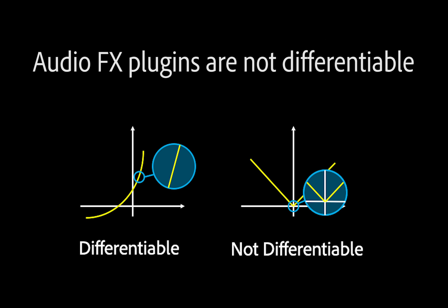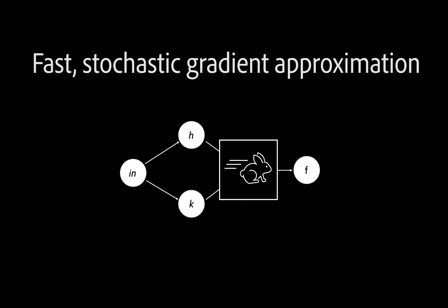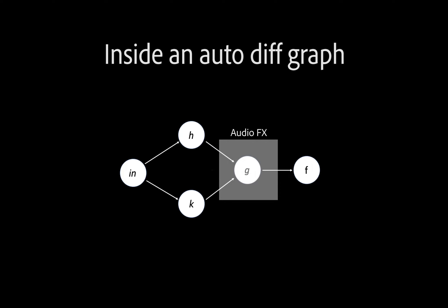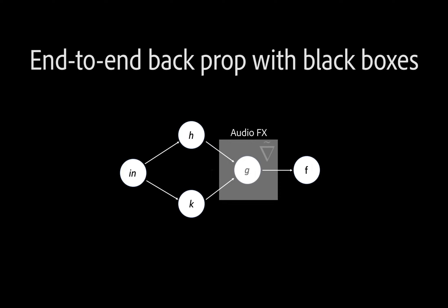To train our network with non-differentiable effects layers, we compute effects layer gradients via a fast parallel stochastic approximation scheme within a standard autodifferentiation graph, yielding efficient end-to-end backpropagation.